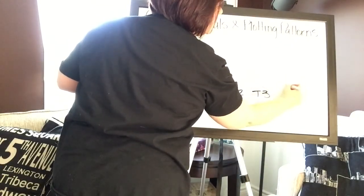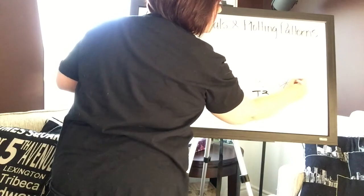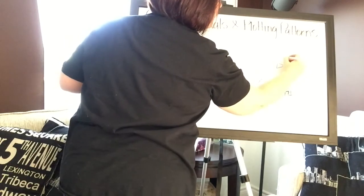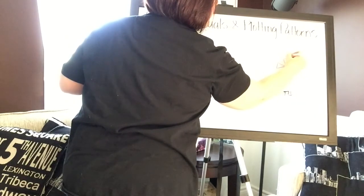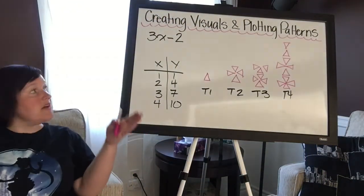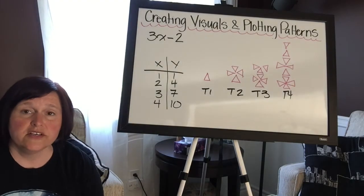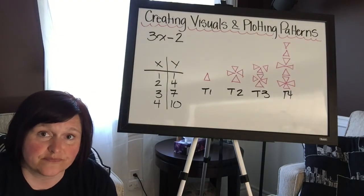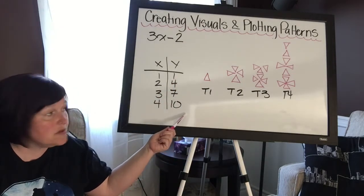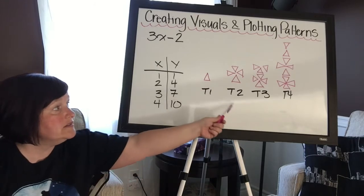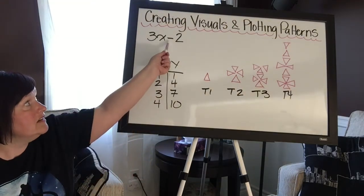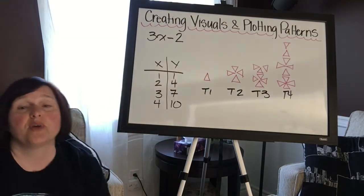And then the next one has ten. So one, two, three, four, five, six, seven, eight, nine, ten. Okay, so there is my visual for 3x minus 2. So you've seen both examples. So again, you can choose just to draw as many shapes as are indicated by y in term one, two, three, and four in any arrangement. Okay, but if you have an addition of a constant, you can break it up between variable and constant.